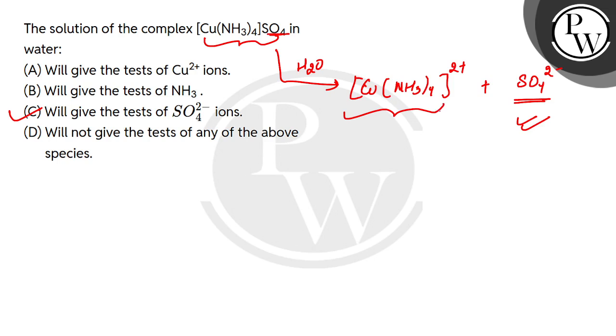Now the cation is not a normal cation, it is not a simple cation, it is a complex cation. The components within the complex cation do not show separate identification. So in this complex, you will not have Cu²⁺ identification. You will not have a test of NH₃ as a ligand that is present.